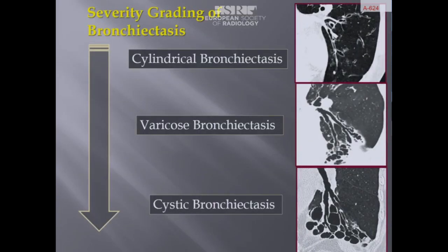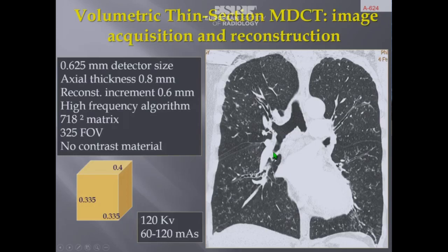The grading severity of bronchiectasis on CT may be based on the degree of dilatation of airways, from cylindrical to varicose and to cystic bronchiectasis. Volumetric thin-section MDCT is the imaging technique of reference to characterize bronchiectasis and to assess the extent of both bronchiectasis and associated small airway disease.